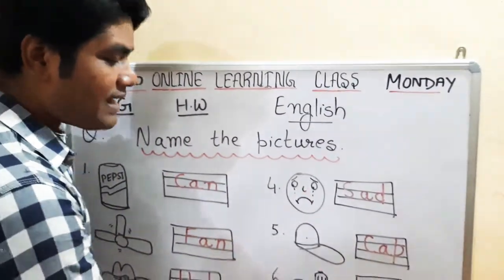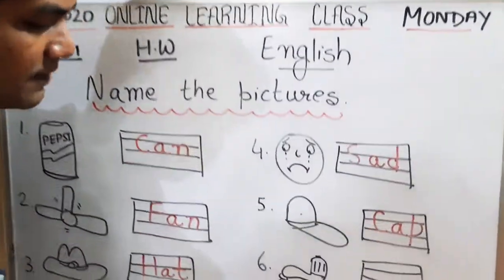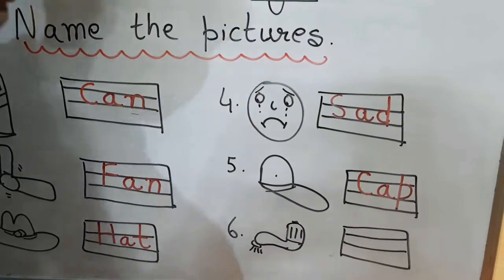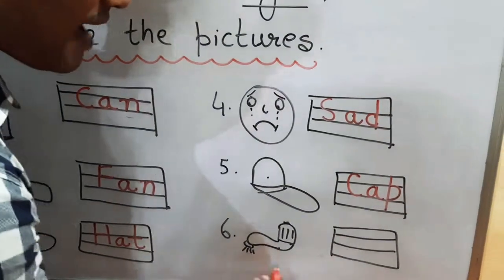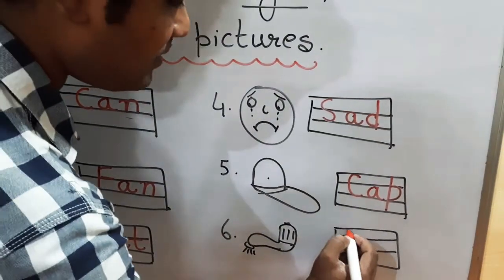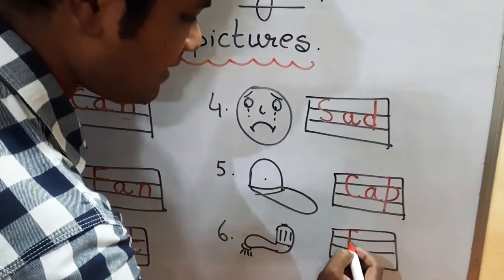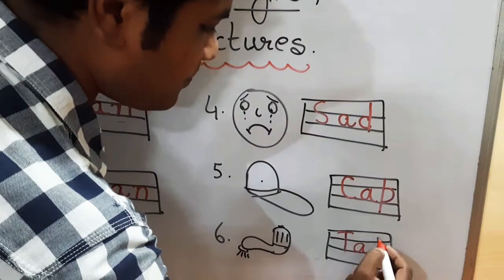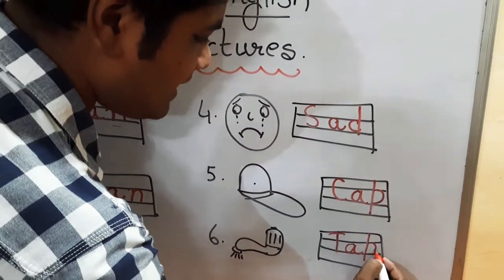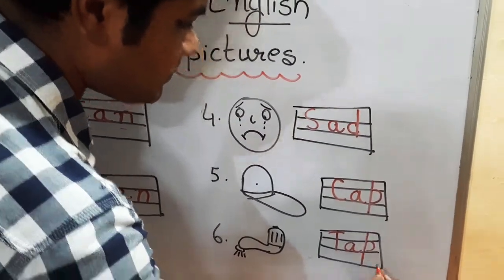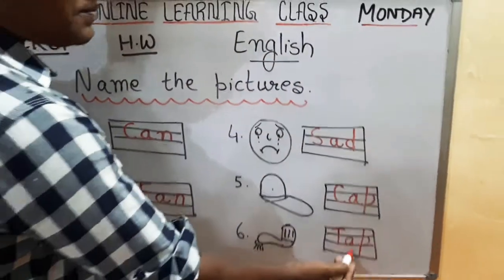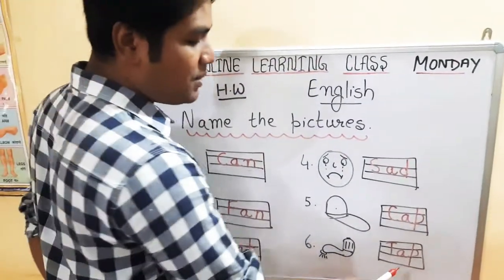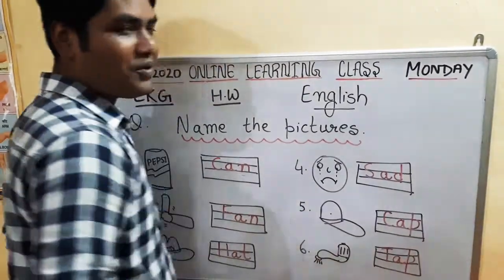Look at the last picture. What is this? It is a tap. Tap. Write down T-A-P, tap. App sound word. Tap is also an example of app sound words.